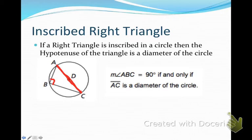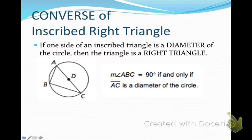Now the converse of that says if one side of an inscribed angle is a diameter of the circle, then the triangle has to be a right triangle. So if I didn't mark that this triangle was a right triangle, I would know immediately that it is because this side of the triangle is the diameter. Therefore, it has to be a right triangle.